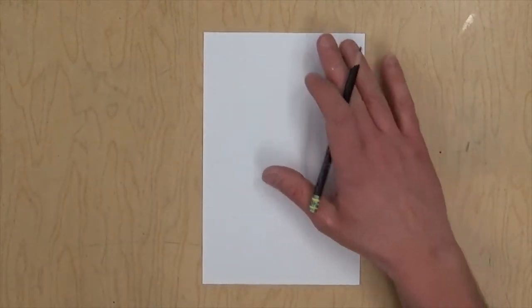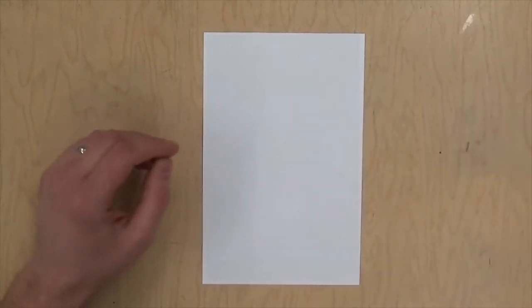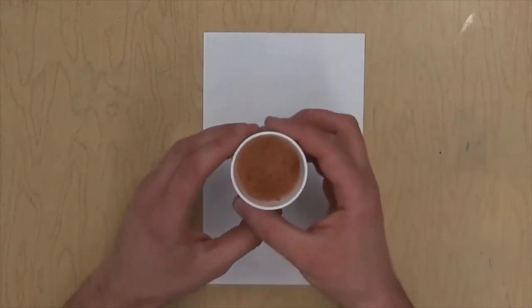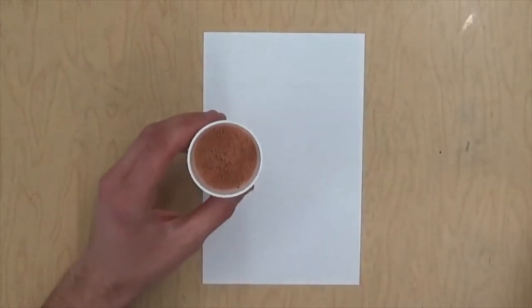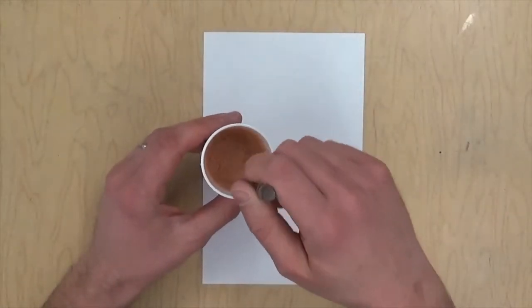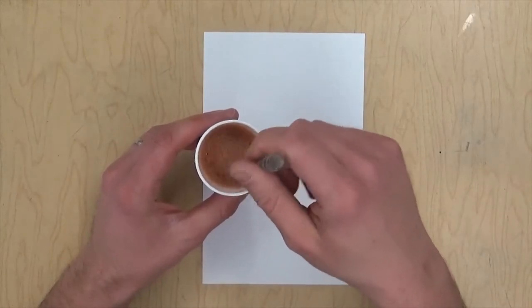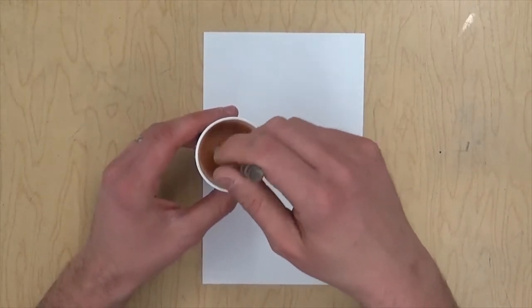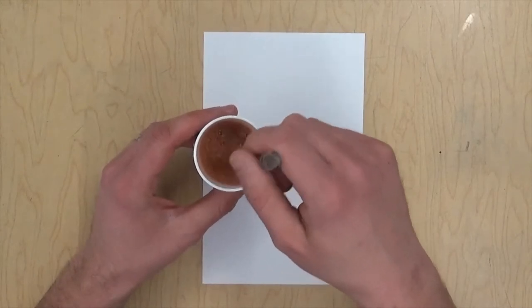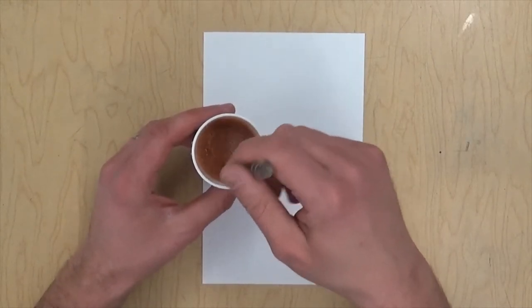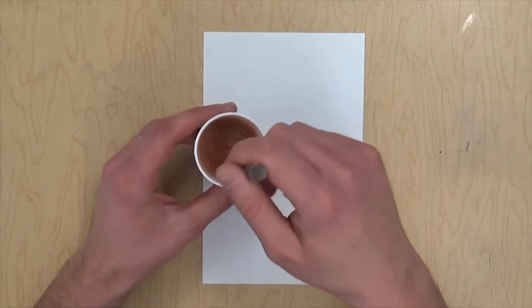But the first thing we're going to do is make this look old. So before we draw and write our cartouche, I've got a brown paint and I put a little water in it. I'm just going to stir it up with a brush to make a wash and I'm going to use my wash to stain the paper.